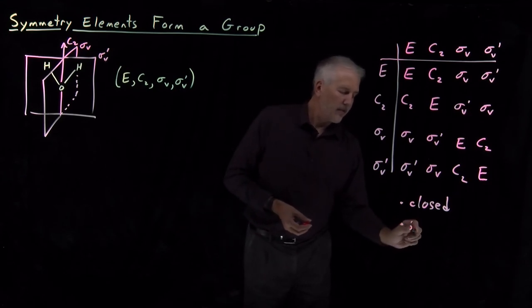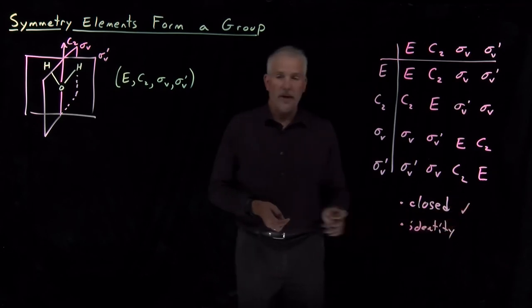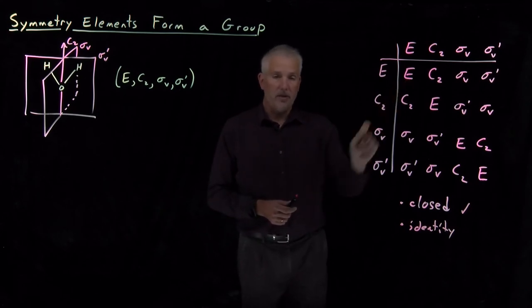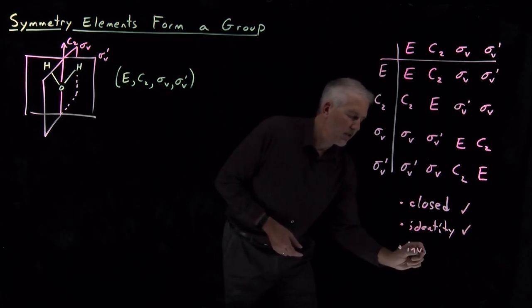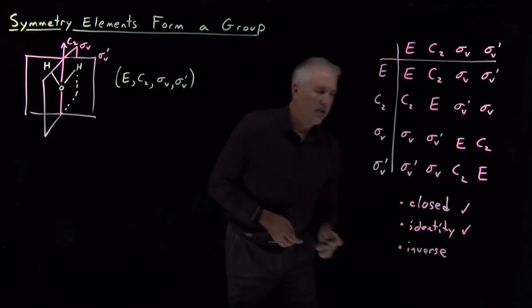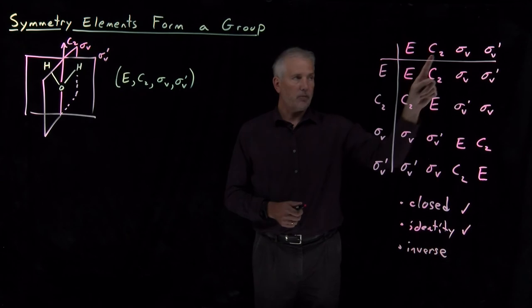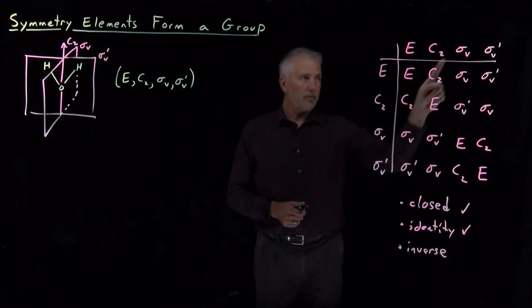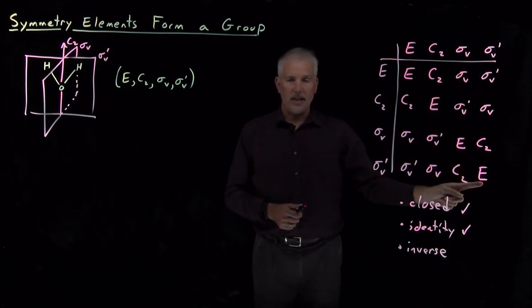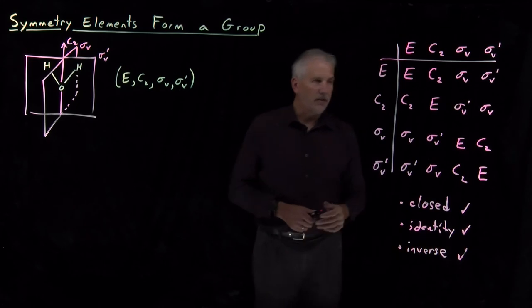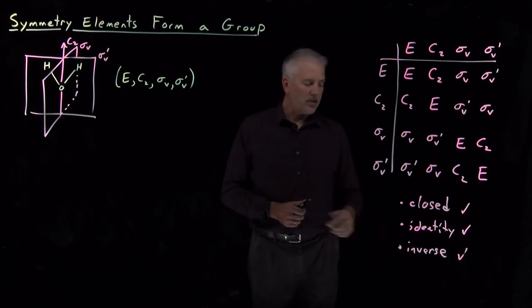We also need to have an identity. So, the set is closed. Do we have an identity? Sure. In fact, we call it the identity. So, every group of symmetry elements has this identity operation. Is there an inverse? If I do C2, is there something I can combine it with to get an identity? Sure. C2 followed by C2 is identity. Reflection followed by the same reflection is identity. A different reflection followed by the same reflection is identity. So, there are inverses. Every element has an inverse. Even E has an inverse. Every element is its own inverse in this case.